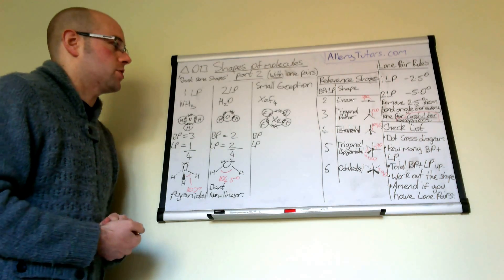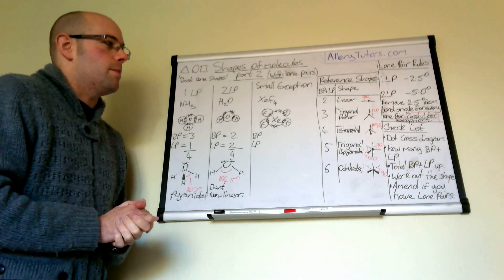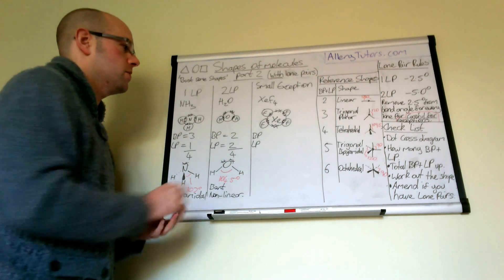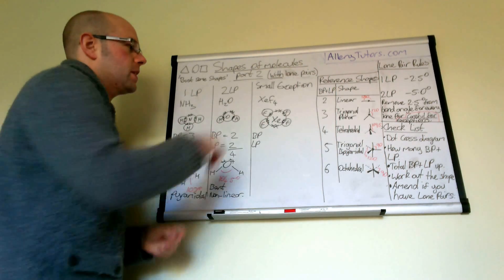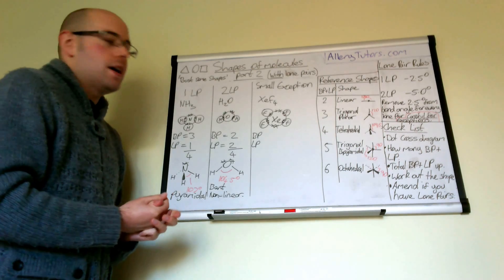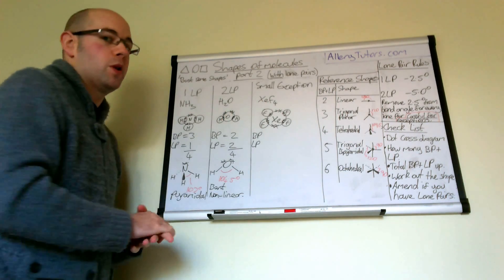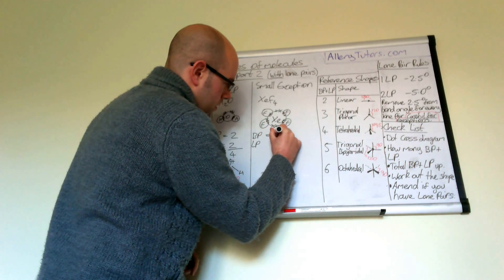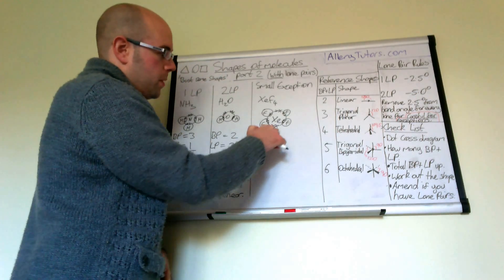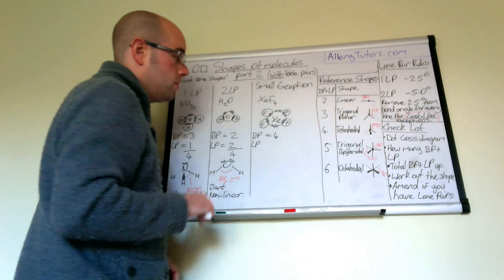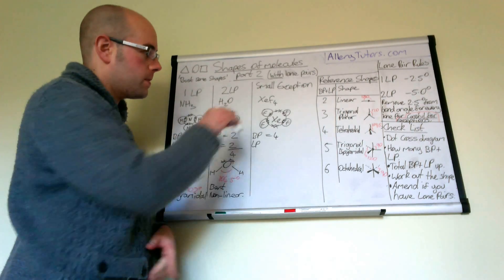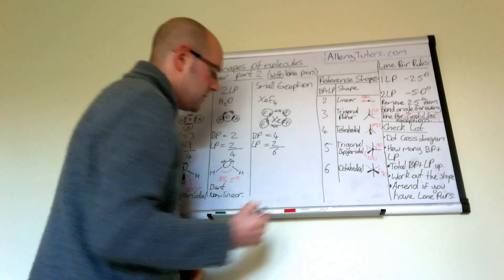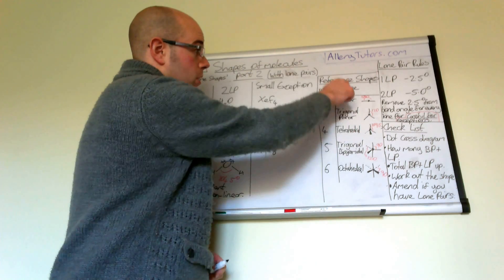The last example is a slight exception — xenon tetrafluoride (XeF₄). Remember that for every lone pair you have, you remove two and a half degrees from your bond angle, but this one is a little bit different. Xenon is a noble gas but it can actually bond with other elements. We have four bond pairs and four electrons left that aren't involved in bonding — they pair up to give a total of two lone pairs. Adding them up: four plus two gives us a total of six. Our reference shape for six is octahedral.